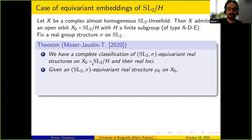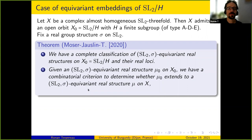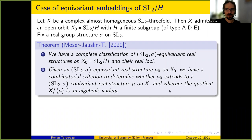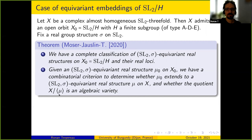Once you know all real structures on the open orbit, the second step is to see which ones extend to an equivariant embedding X. Given an equivariant real structure μ_0 on X_0, we obtain a combinatorial criterion determining whether μ_0 extends to an equivariant real structure μ on X. When it extends, we also have a criterion to determine whether the quotient is an algebraic variety and not just an algebraic space.